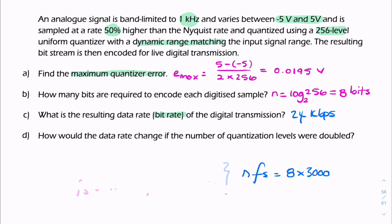Final question. It says, how would the data rate, so how would NFs, the data rate, they're asking about N times Fs. How would that change if the number of quantization levels were doubled? So number of quantization levels doesn't affect Fs, it affects N.